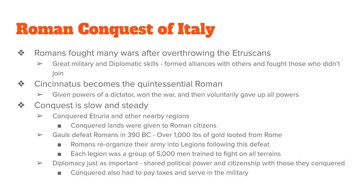The Romans reorganized and reformed their army, forming what are known as legions. Each legion was a mobile fighting unit of about 5,000 men, and they would become some of the best soldiers in the history of the world. That said, diplomacy remained the primary way the Roman army did business. The Romans offered the people they conquered political power and citizenship so they would join willingly.